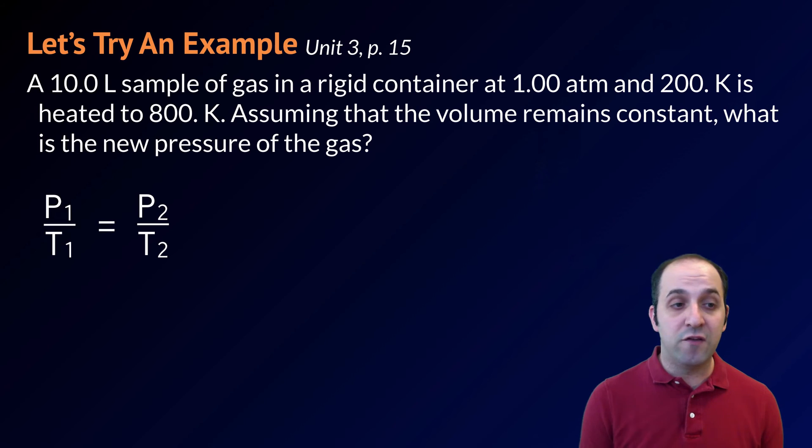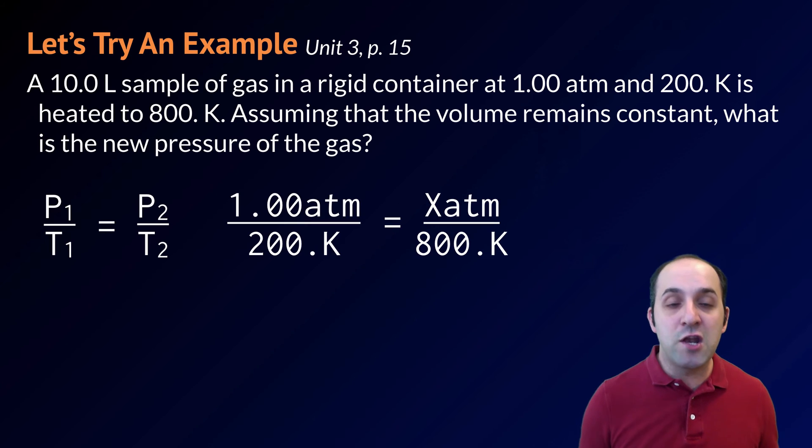We're going to use Gay-Lussac's law to solve this. Simply put, P1 over T1 is equal to P2 over T2. Going into the problem and pulling out the values that I need, I get an initial pressure of 1.00 atm, an initial temperature of 200 degrees Kelvin. I want to know what my final pressure is, that's my unknown, and my final temperature is 800 degrees Kelvin.